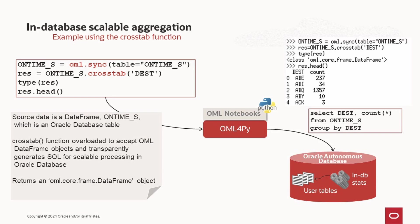Let's consider an example involving the overloaded cross-tab function for in-database scalable aggregation. We first get our proxy object to a table called onTimeS, and then ask to count the distinct values in the destination column. This request effectively gets translated into a SQL query with a groupby clause on the dest column. Running this function, we see the result type is an OML DataFrame object. When we invoke the head function, we retrieve the first few rows of the result. Note that results may be large themselves, so rather than pulling the entire result to the client — requiring both time and memory — the result remains in the database with a proxy object returned for subsequent use.